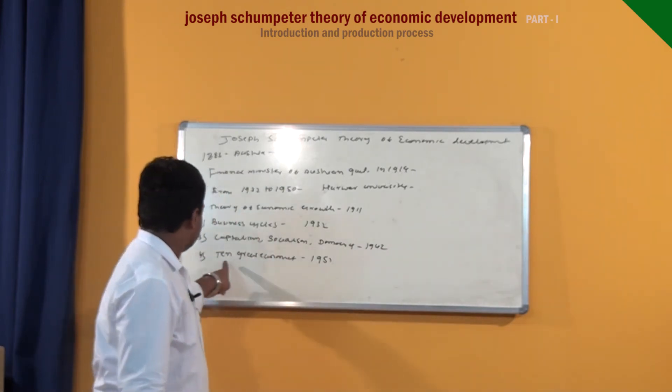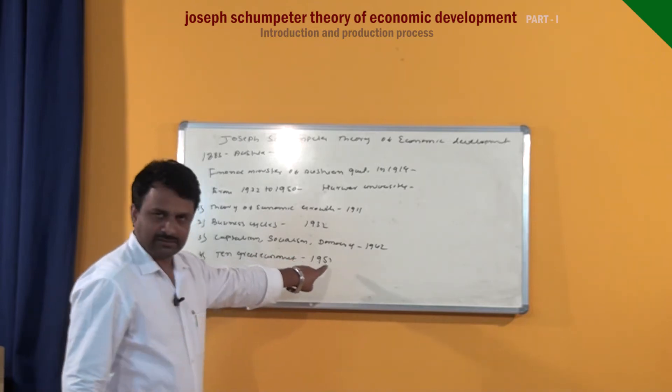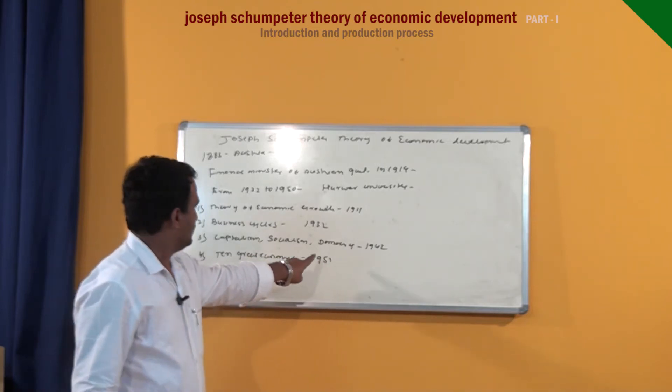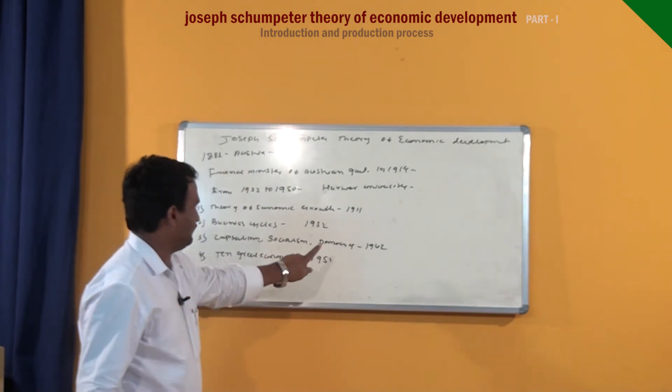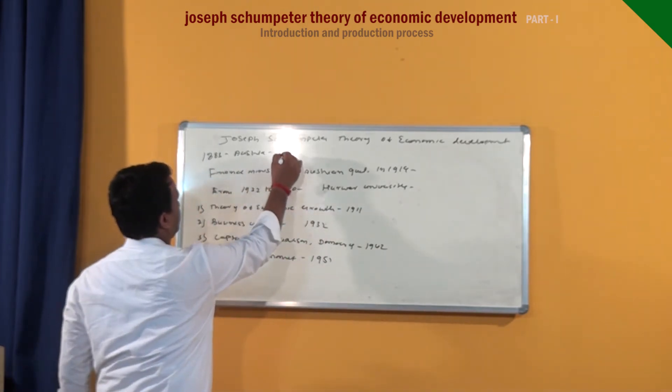And Ten Great Economist, published in 1951. He died in 1950. This Ten Great Economist was published in the year 1951, but Joseph Schumpeter died in 1950.